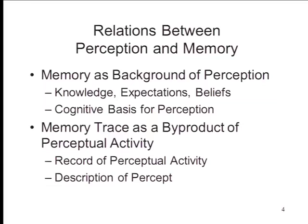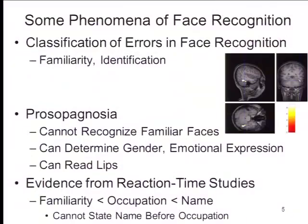Let's make another connection between person perception and social memory by looking at models of face recognition. It's one thing to perceive an object as a face, or a face as expressing anger or disgust. It's one thing to think a face is beautiful. It's another thing entirely to identify that face with a particular person. We now have a fairly good understanding of what that process looks like — it's quite interesting. The database behind these models of face recognition includes the kinds of mistakes people make in face perception, which can classify what processes are involved.